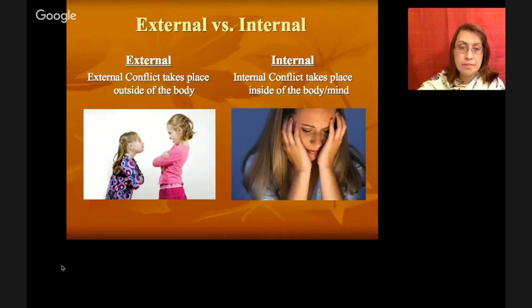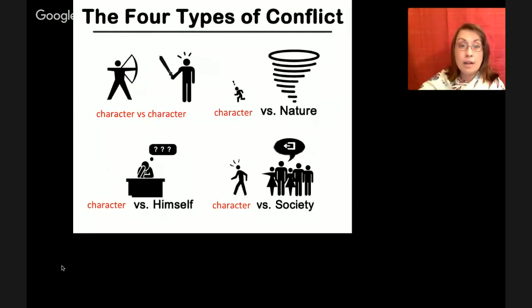If we look at this chart, you can see that external is taking place outside of the character. So these two are having a conflict. Internal though is inside of your own heart or mind. So she's super sad. Nothing outside of her that we can see is creating that problem. But she's super sad.